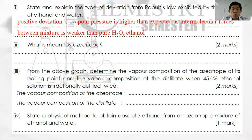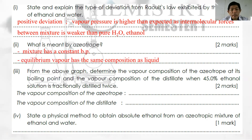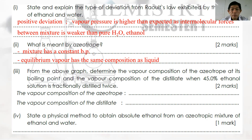Question 2b: What is meant by azeotropic mixture? An azeotropic mixture is a mixture that has a constant boiling point where at equilibrium, the composition of the liquid is the same as the composition of the vapor.